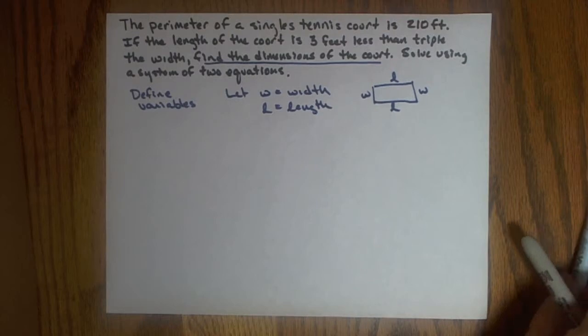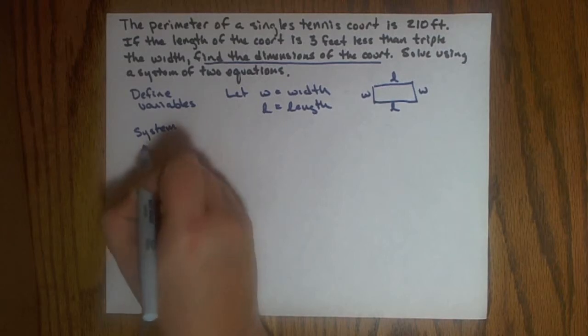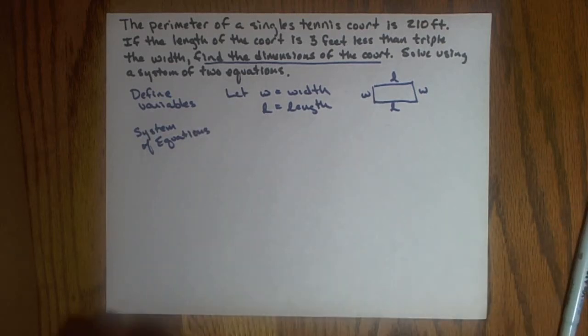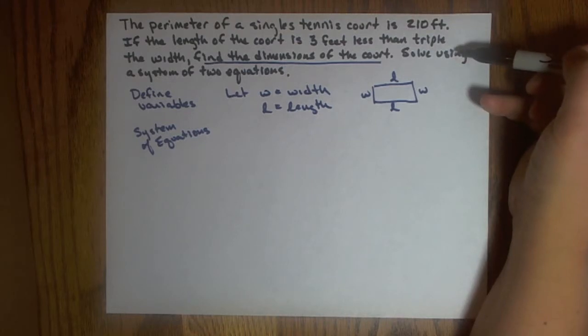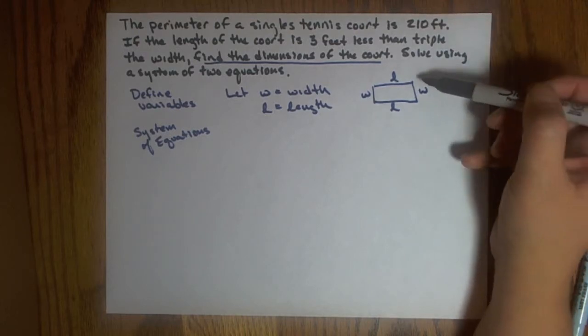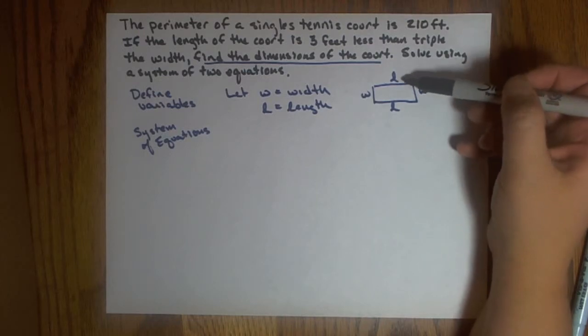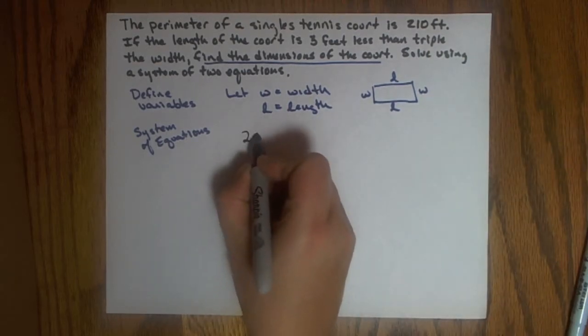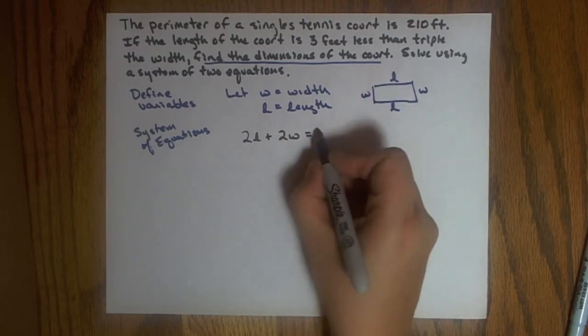The second step after defining my variables is to write my system of equations. I know I'm going to need two equations in order to solve this problem, since I have two unknowns. So if I read my problem that I was given, I'm trying to find information to create two equations. The first sentence says that the perimeter of the tennis court is 210 feet. Well, I know for a rectangle, the perimeter is the distance around, and it would be two times the length plus two times the width. So that would be my first equation: two times the length plus two times the width equals the perimeter, which in this case is 210 feet.